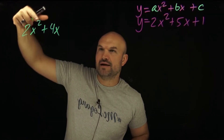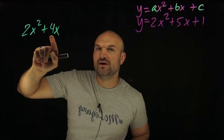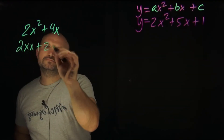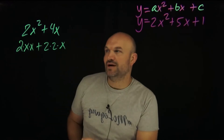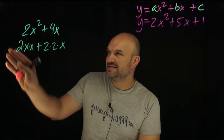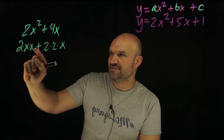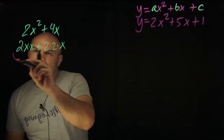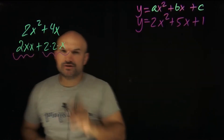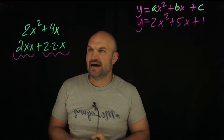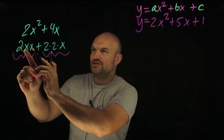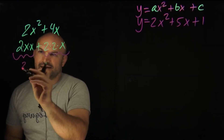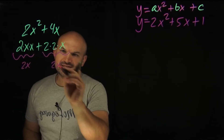Instead of writing x squared I'm going to write x times x. Instead of writing 4 I'm going to break it down to its prime factors: 2 times 2. Now 2x squared is 2 times x times x, and 4x is 2 times 2 times x. Comparing these, we want to find what they have in common. You can see both have a 2x — so 2x is the common factor in both terms.